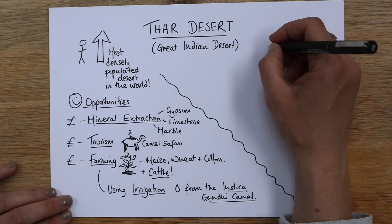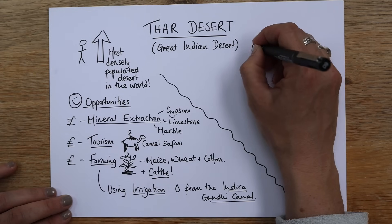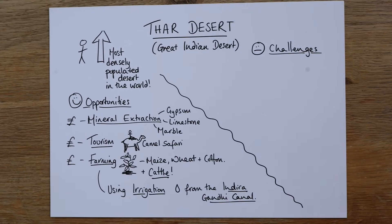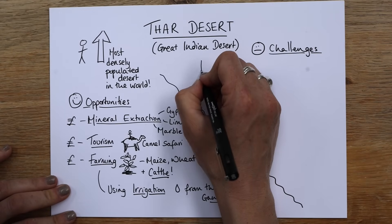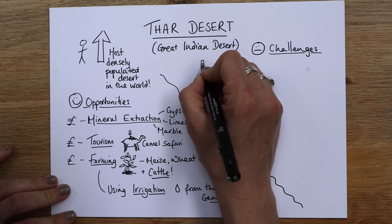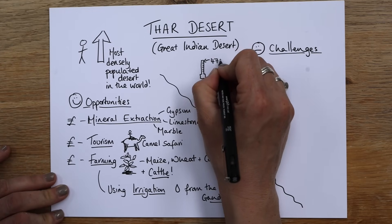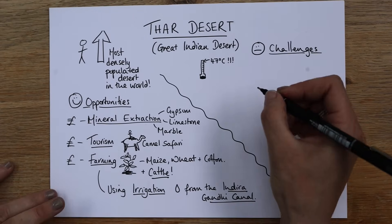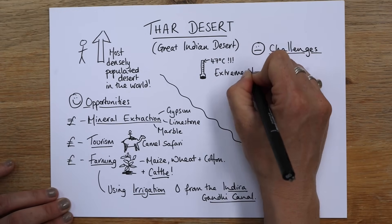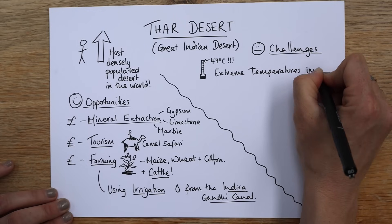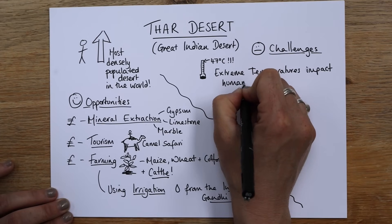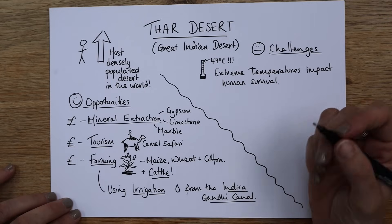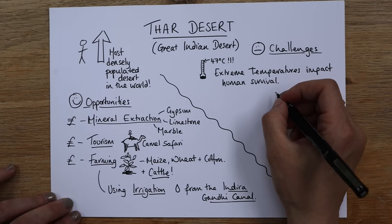There are some challenges and they are not small ones. Just like in a cold environment, the extreme temperatures in a desert are a really limiting factor. It can get to around 47 degrees Celsius — that's really hot, tarmac-melting kind of heat. Extreme temperatures impact human survival — that is no joke. In those extreme temperatures you can get heat stroke and die. There's real risk, and you can't do manual labour and things like that as easily in those temperatures.